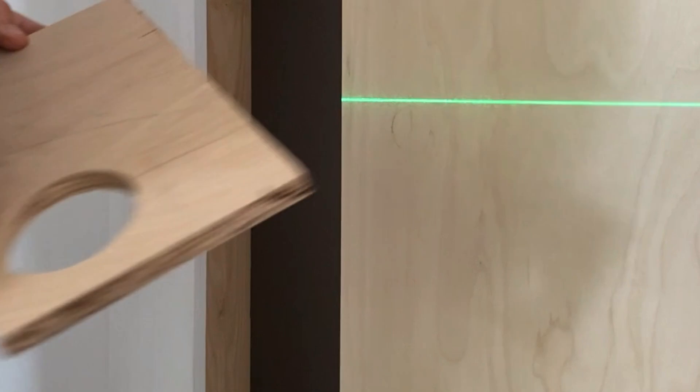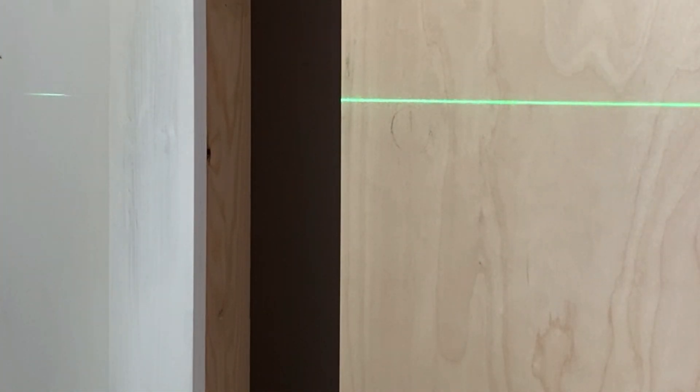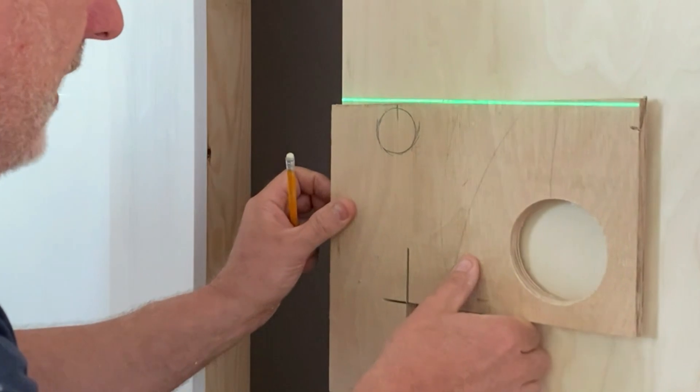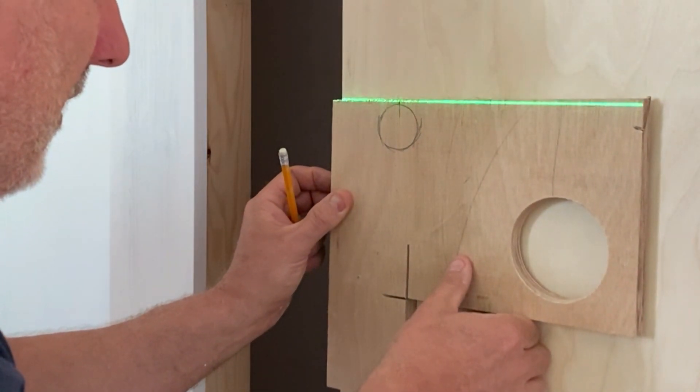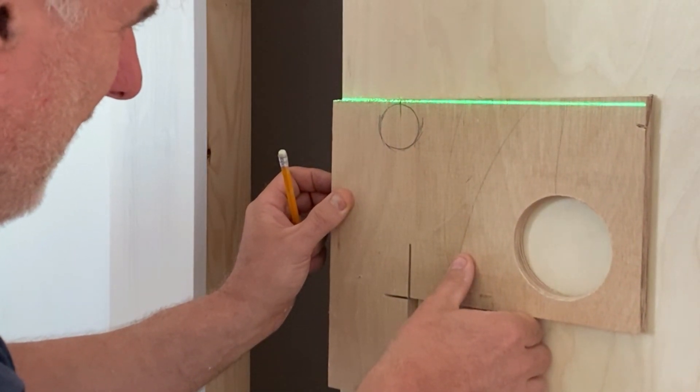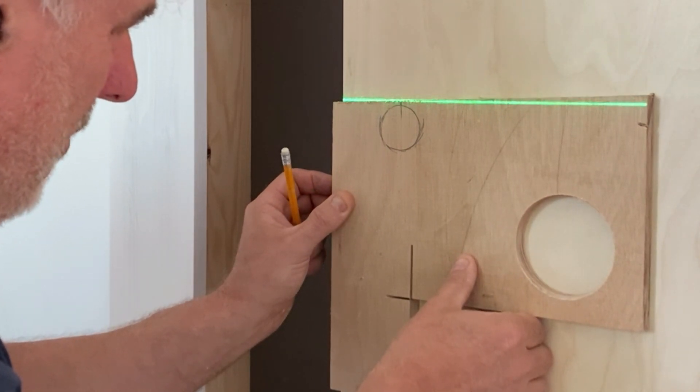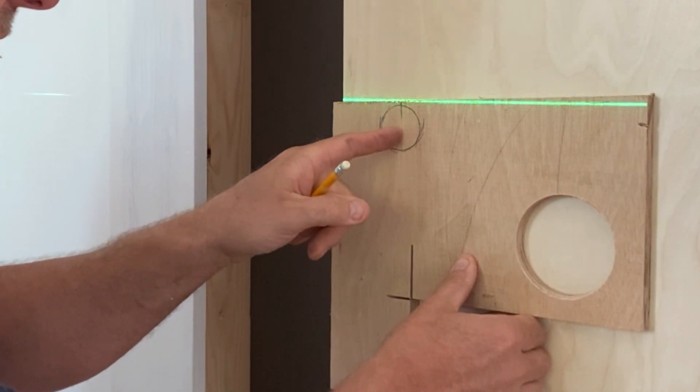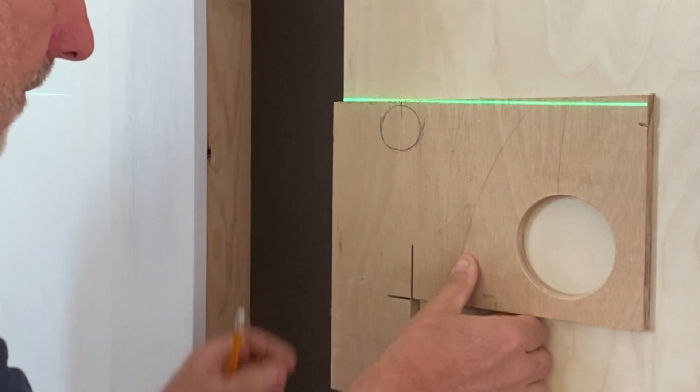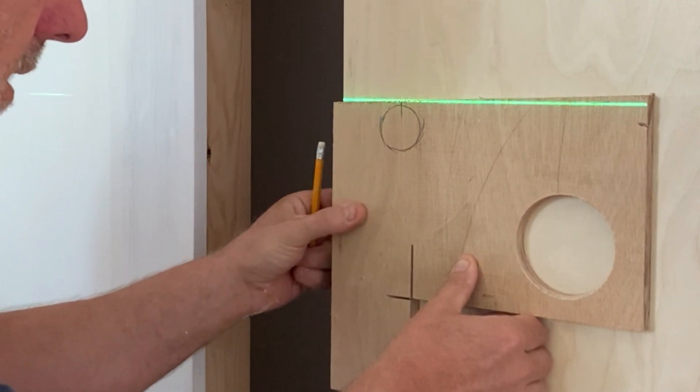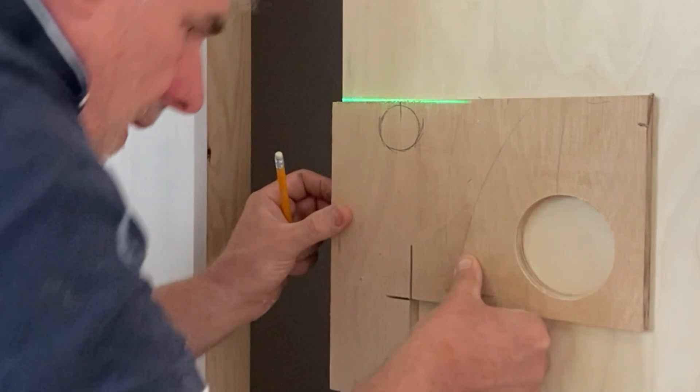I'm going to transfer that onto there, double check it, triple check it. I'm good to go. What I'm going to do is drill this hole there, clamp it onto here, get my router and router this out.